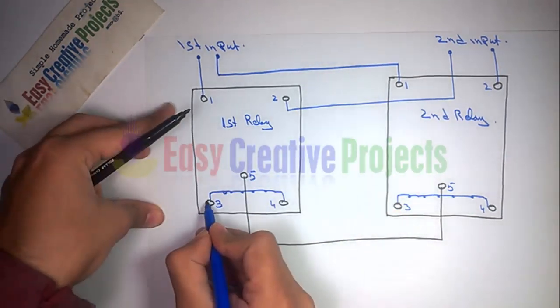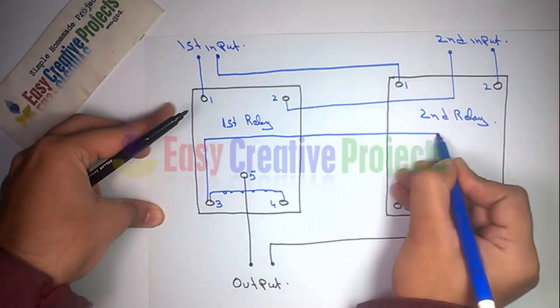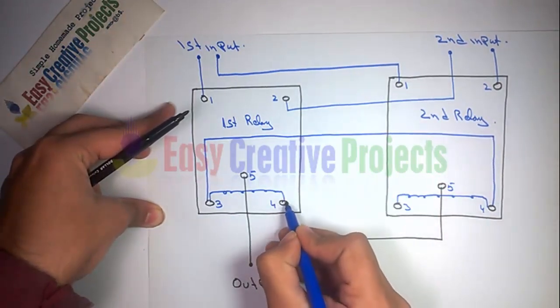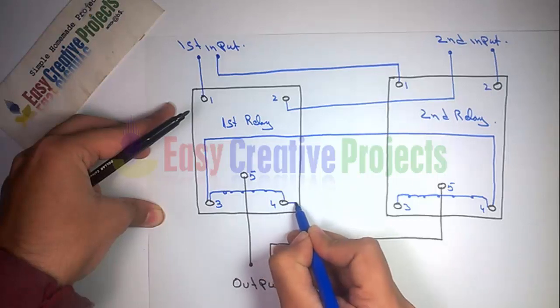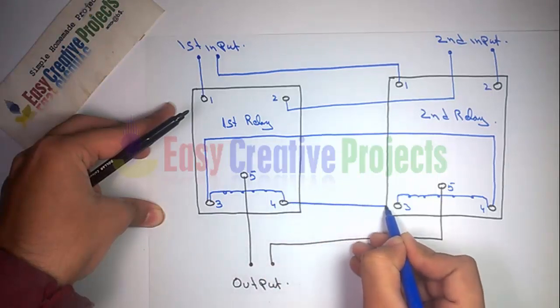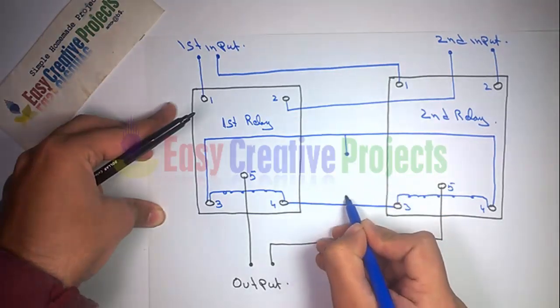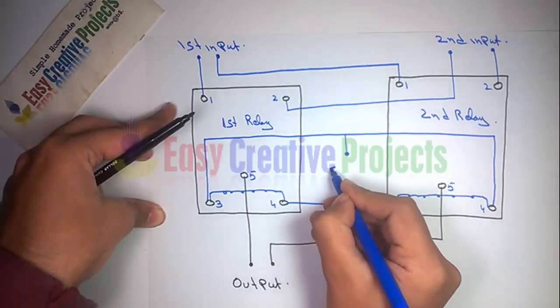Now connect first relay three number pin with second relay four number pin. Now connect first relay four number pin with second relay three number pin. And finally connect six volt power supply with three number pin of both relay.